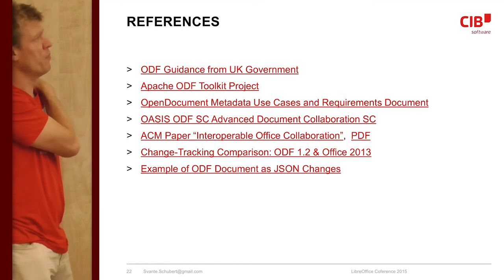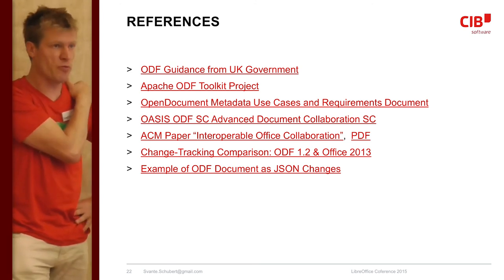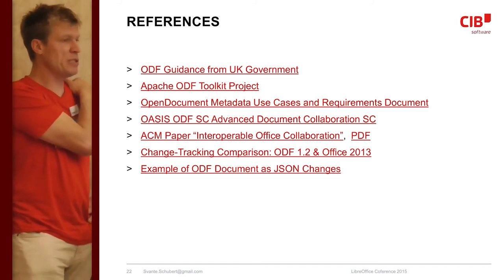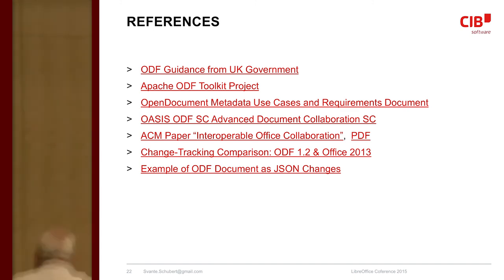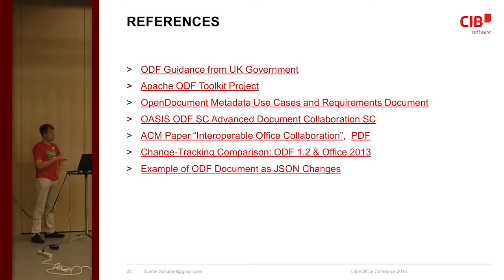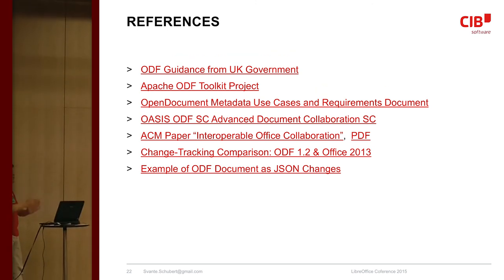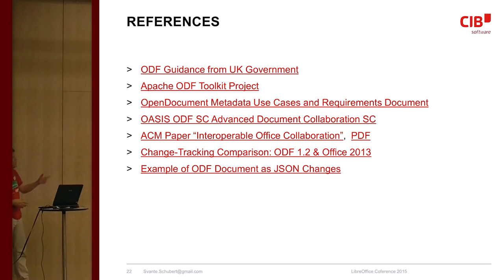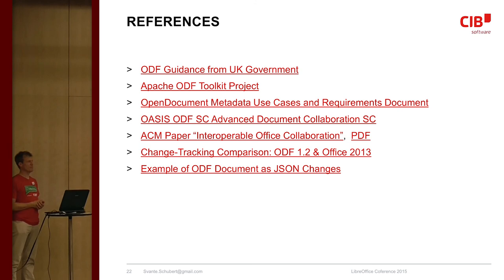There's also a comparison document between ODF 1.1 and 1.2 versus Office 2013 regarding change tracking. Microsoft can only track changes to template styles — like adding one — which is a minor thing. They don't support insertion of columns in change tracking either. And finally, there's an example from Open-Xchange showing how their change representation looks — the list of changes looks like a JSON file attached somewhere. That's it — any questions?